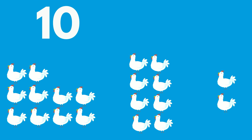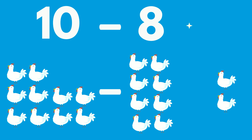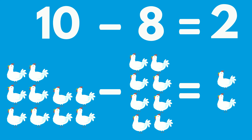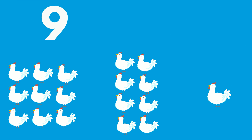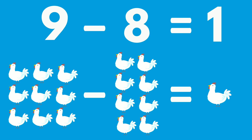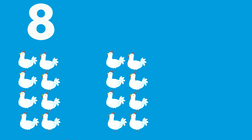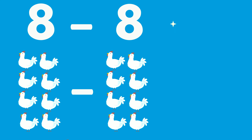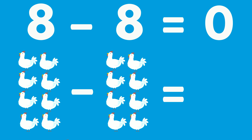10 chickens minus 8 chickens equals 2 chickens. 9 chickens minus 8 chickens equals 1 chicken. 8 chickens minus 8 chickens equals 0 chickens.